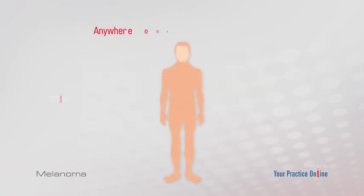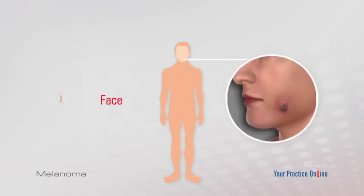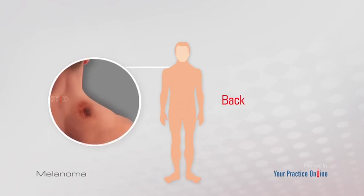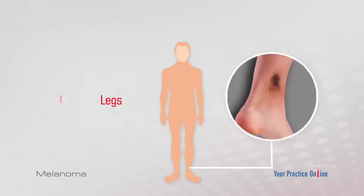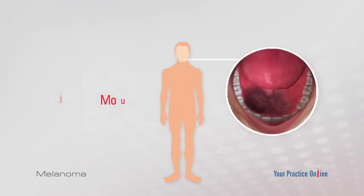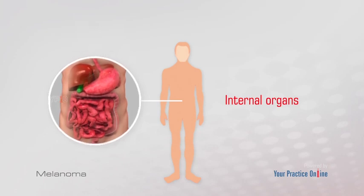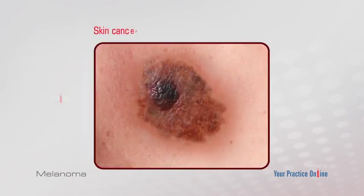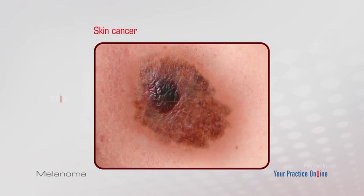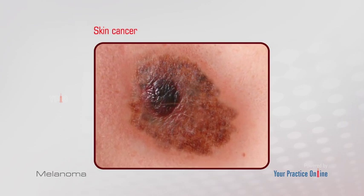Melanoma can occur anywhere on the skin, but often occurs on sun-exposed areas of the body such as arms, face, back, and legs. Melanoma can also occur in the eyes, mouth, or the internal organs, but this is much rarer than melanoma skin cancer. It is a very dangerous type of cancer, and the patient's chances of survival often depend on early diagnosis and treatment.